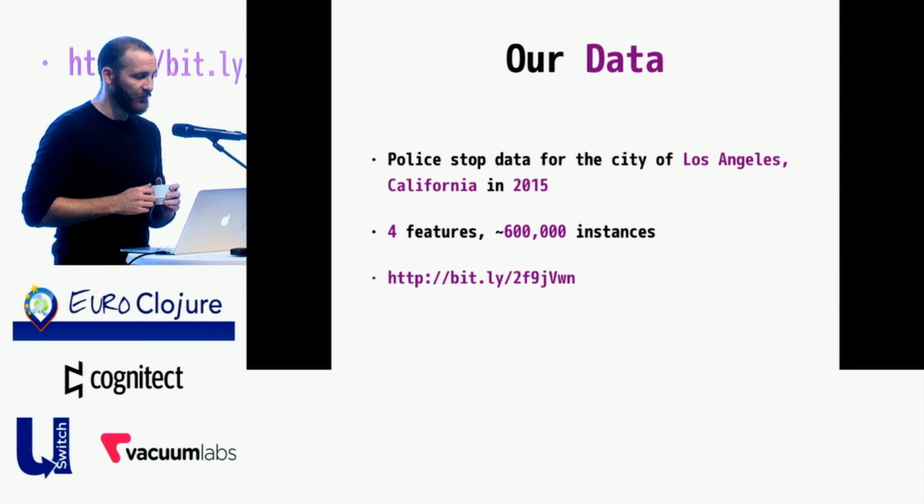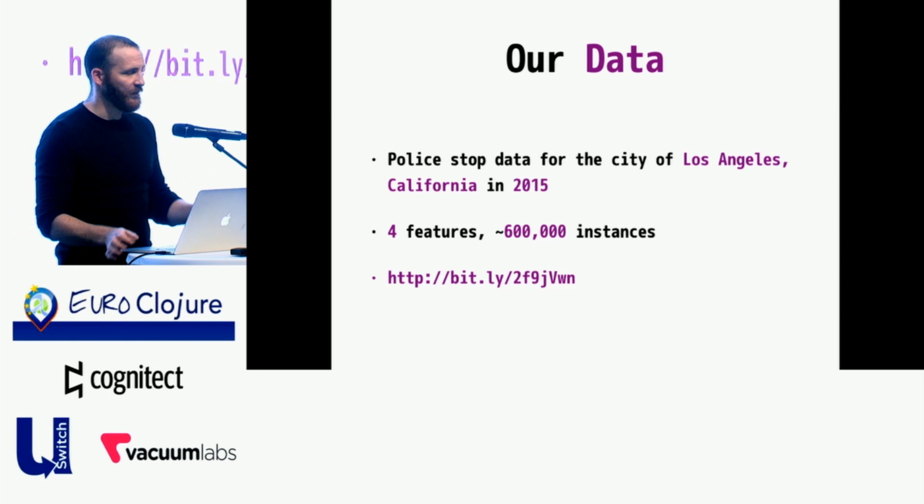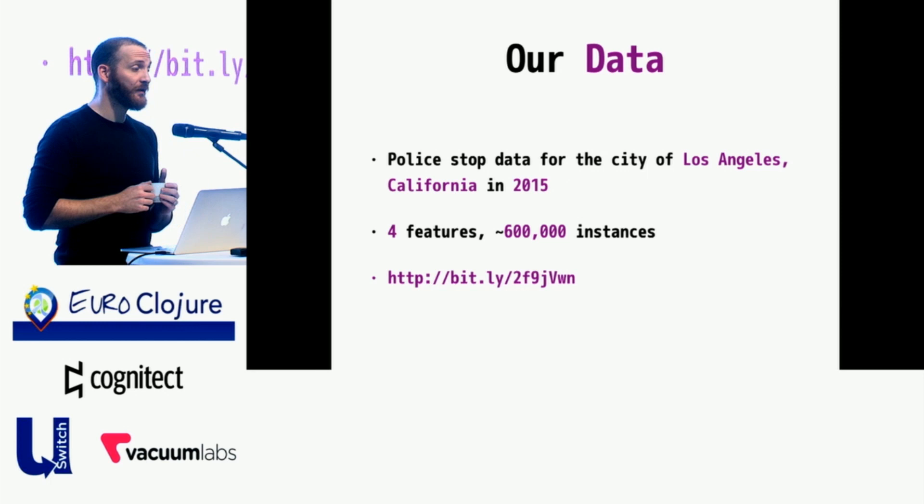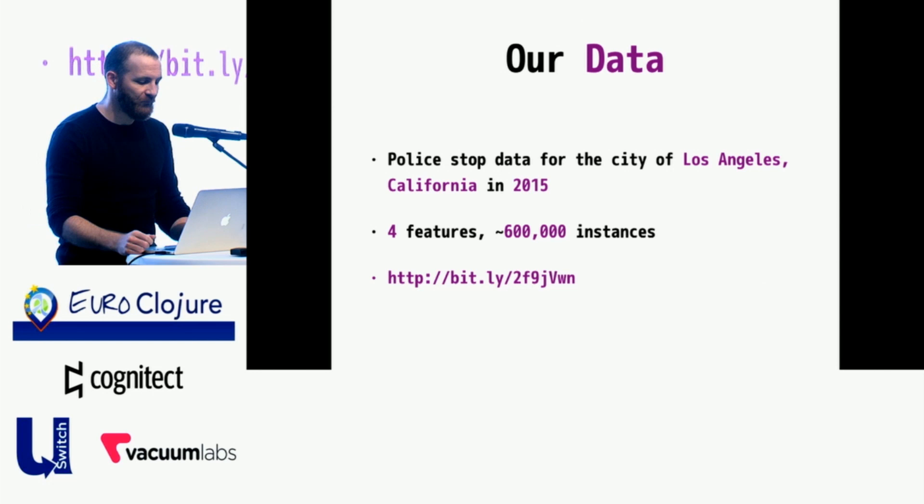Our data: the data I've been using is police stop data for the city of Los Angeles. I'm from L.A. In the year 2015, there are four features that we currently care about. There are more in the original dataset, which is what that bit.ly link is to. If you're curious, you can follow that link and take a look at the L.A. open data. There are roughly 600,000 instances, which sounds like a big number until you realize we're talking about Spark and machine learning. 600,000 instances is not very much. This can be done with scikit-learn. But I think it's valuable to know how it works so that if you do have millions of rows, you have a nice solution.